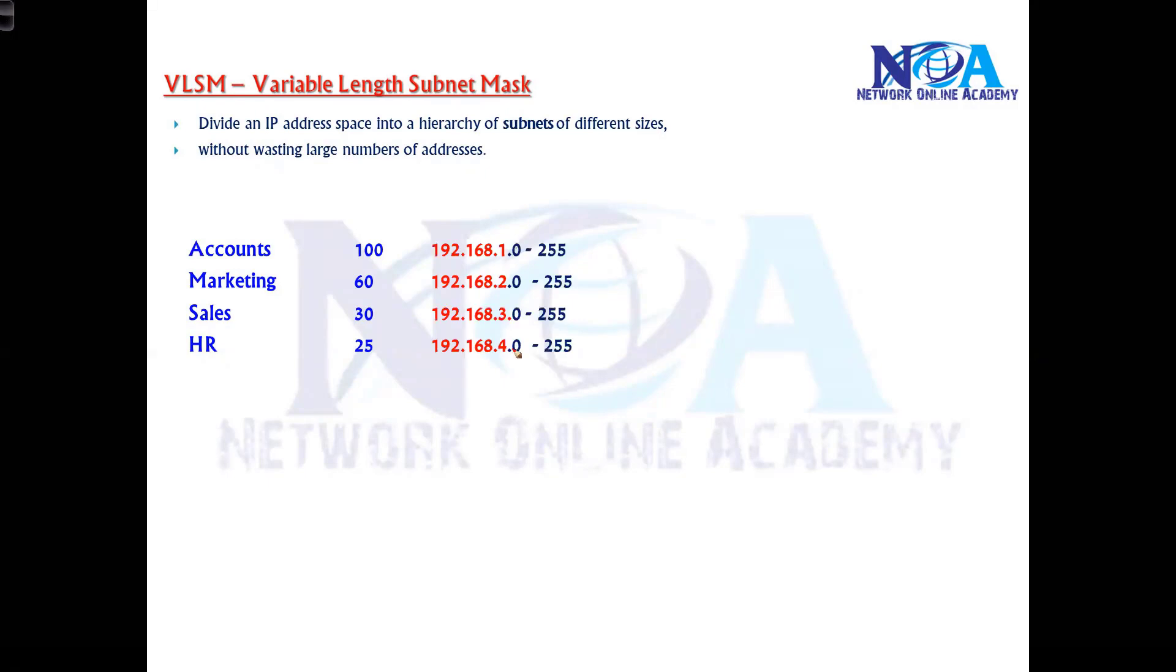Without subnetting, I can simply use one C class for each. I can use 192.168.1.0 for accounts department, 2.0 for marketing, 3.0 and 4.0 for the others.